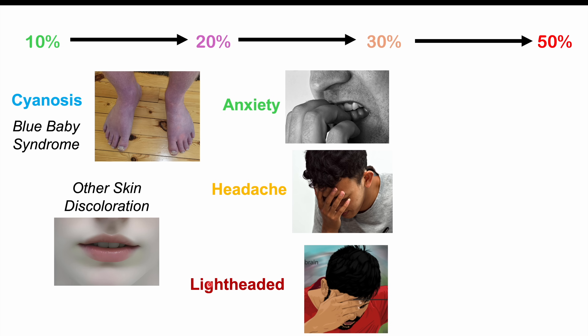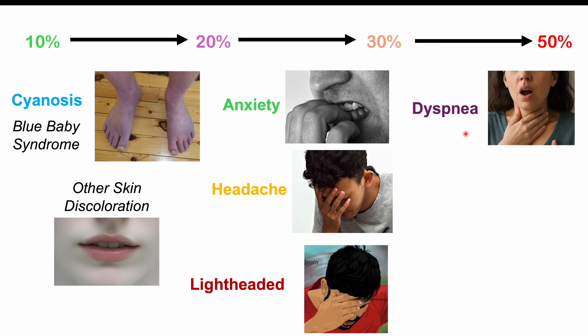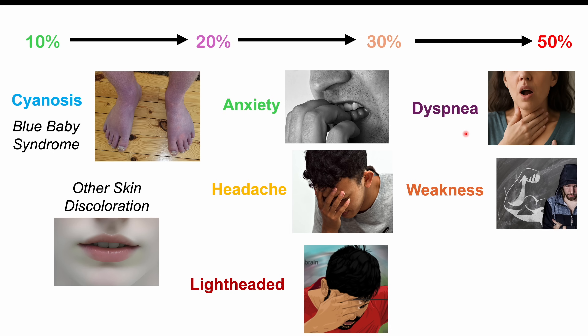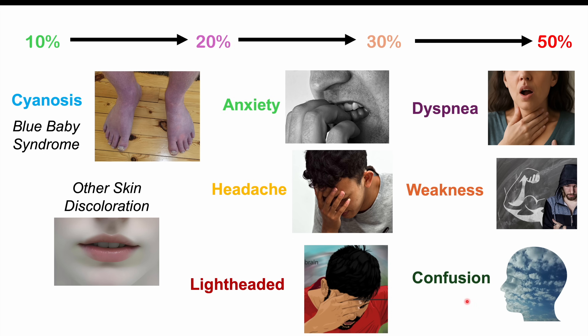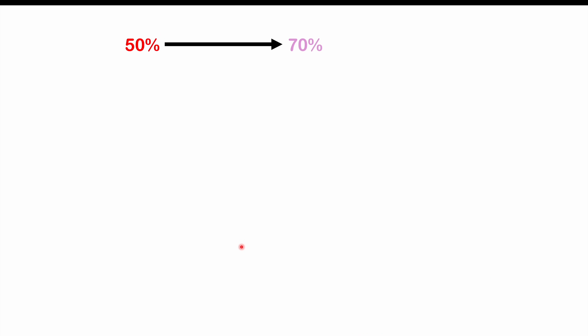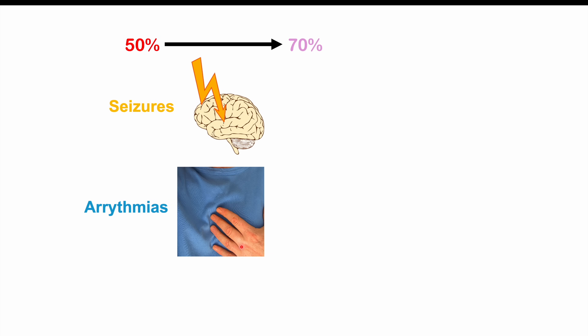From 30% to 50% methemoglobin, patients can start to get dyspnea or shortness of breath, tachypnea with respiratory rate greater than 20 breaths per minute, weakness, confusion, and chest pain. From 50% to 70%, more neurological and cardiac issues occur, including seizures, arrhythmias, very high acidosis levels, delirium, and coma.